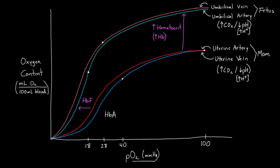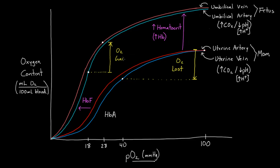The main point here is that the oxygen lost by mom — going from whatever's in the uterine artery to whatever's in the uterine vein — equals the oxygen gained by the baby. The baby's starting point is the umbilical artery, and the finishing point is the umbilical vein. So oxygen gained by the fetus equals oxygen lost by mom; the gained and lost amounts do equal one another.